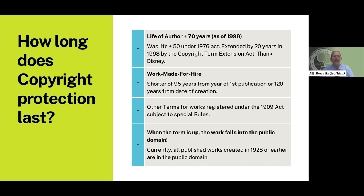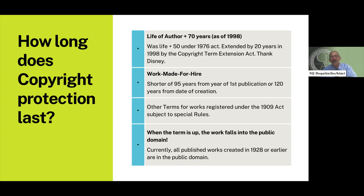Next year, works first published in the U.S. before 1930 will be in the public domain, and the following year those published before 1931 will be. There's even a website or app that shows all the works published in the year that has just expired — a quick reference if you're interested in using old copyrighted works, many of them famous, now available to alter or otherwise use.